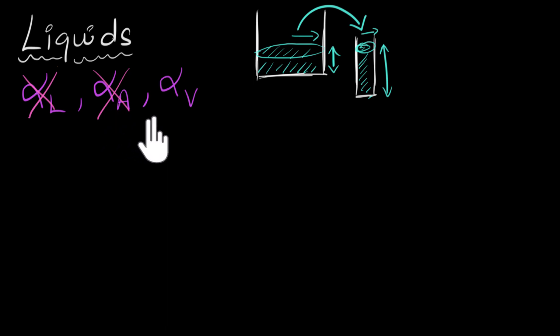But what is fixed for a liquid is its volume. Even if you change the shape, even if you change the container, the volume is something that never changes. If you want to change the volume of a liquid, there's only one way to do that: by changing the temperature. And therefore, for liquids, the only number we're gonna talk about is the volume expansion coefficient.